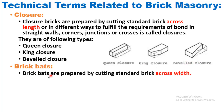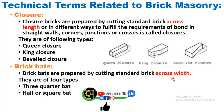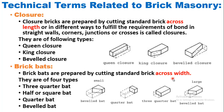What are brick bats? Brick bats are prepared by cutting standard bricks across the width. There are four types: three-quarter bat, half or square quarter bat, quarter bat, and beveled bat. In bats, bricks are cut along the width. The difference between closers and bats is clear: in closers, bricks are cut across the length, whereas in brick bats, bricks are cut across the width.